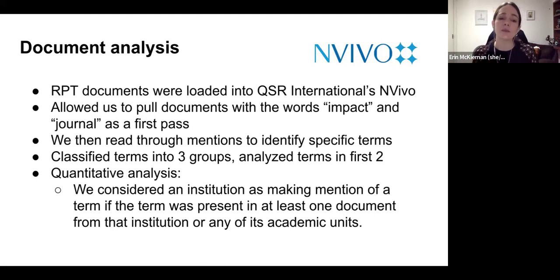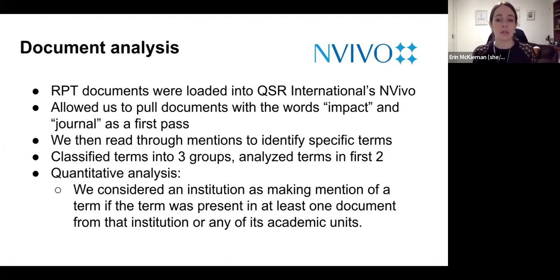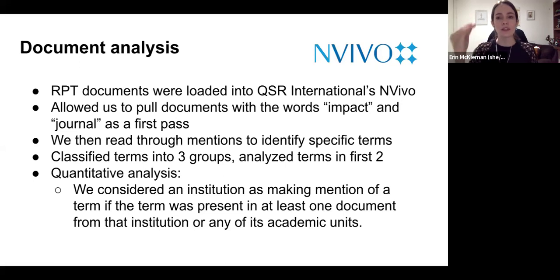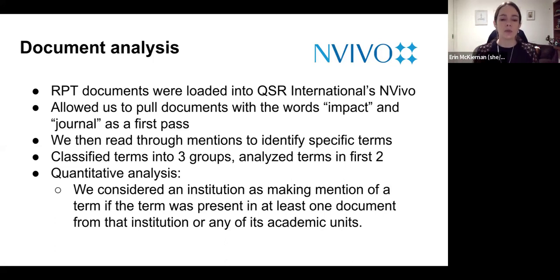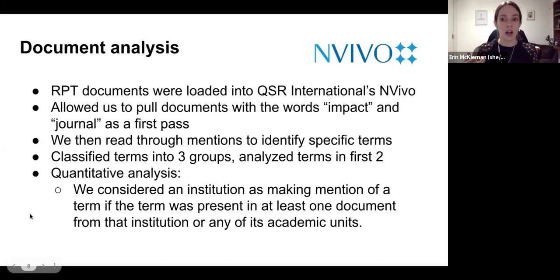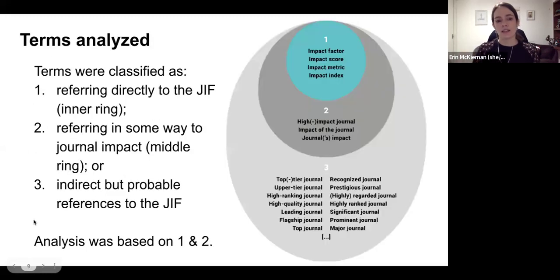For the quantitative analysis, what we did was consider that an institution has made a mention of one of these terms if the term was present in at least one document from that institution or any of its academic units. We did this because we didn't want to over-represent an institution — we sometimes had several documents from several academic units from a single institution. So we considered things at the institutional level. That was our quantitative analysis, just to get an idea of the prevalence of the use of journal impact factor across these documents and institutions, and then break it down by institution type.